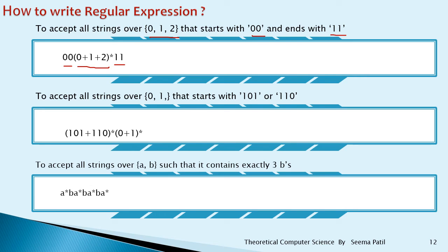To accept all strings over {0, 1} that start with 101 or 110: write (101 + 110) at the start, then (0 + 1)* meaning any number of 0s and 1s can follow. The meaning of star is they may exist or may not exist.